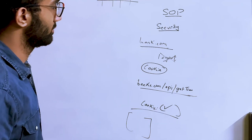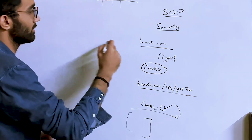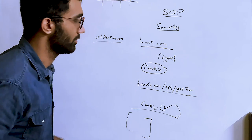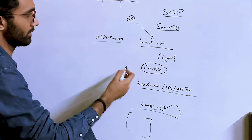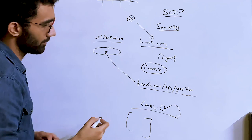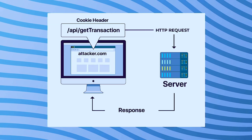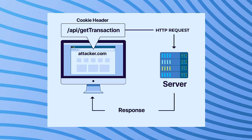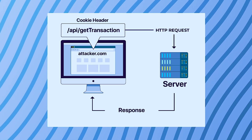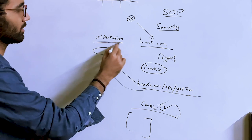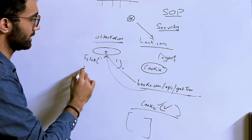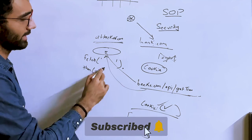Let's say you visit attacker.com while still logged into bank.com. If attacker.com also tries to call the same API, the browser knows you're logged in and would use your cookie to return data to attacker.com. The code running on attacker.com can then do malicious things — it can fetch your data and send it to its own server.